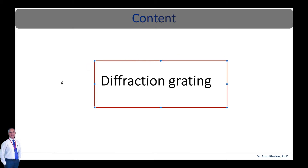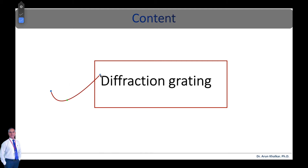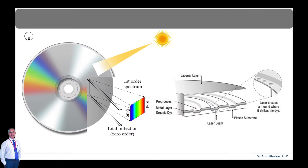In optics, a diffraction grating is an optical component with a periodic structure that splits and diffracts light into several beams traveling in different directions. The reflection of different colors depends totally upon the spacing of the grating and the wavelength of the light, so the grating acts as a dispersive element. A very similar phenomenon of dispersion of light can be seen in the prism. A very common example in our daily life is the compact disc.